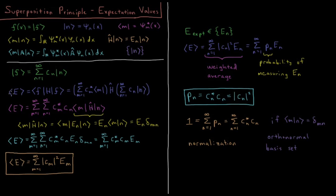What is our average energy in this case? We can only measure the eigenvalues of individual eigenfunctions, but what is the average value we are going to measure? That is this expectation value integral. Substituting in our superposition for f, we have a sum from m equals 1 to infinity of c_m star times bra vector m, and the Hamiltonian operator acting on the sum from n equals 1 to infinity of coefficient c_n times eigenfunction psi_n. Bringing these two sums together and factoring out the constant coefficients c_m star and c_n, we have a double sum over m and n of c_m star c_n times the expectation value integral m-H-n.